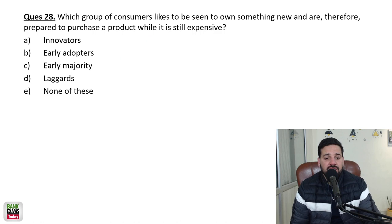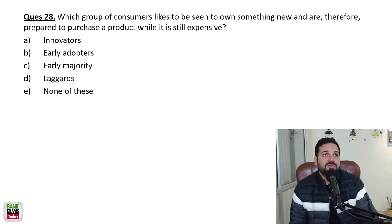Which group of consumers likes to be seen to own something new and are therefore prepared to purchase a product which is still expensive? So sometimes there are some distinctive products. As of now, the VR glasses - virtual reality glasses are very expensive, not many people are buying VR glasses. The virtual reality glasses are like 20,000 to 25,000 rupees. In the future, most probably everybody is going to buy VR glass. Everybody is going to buy VR glass in the future, but as of the moment, because they are expensive and because we do not know its purpose, not many people are buying VR glass. So anybody who's buying VR glass right now is an innovator. He's an innovator.